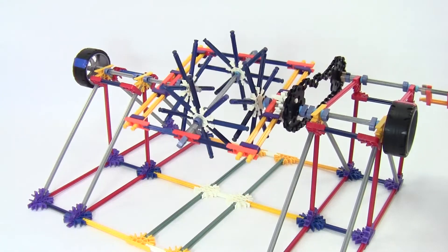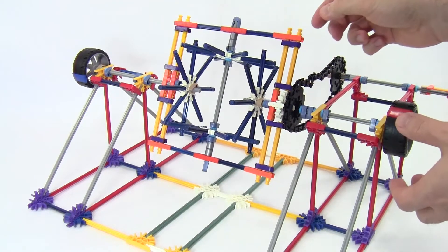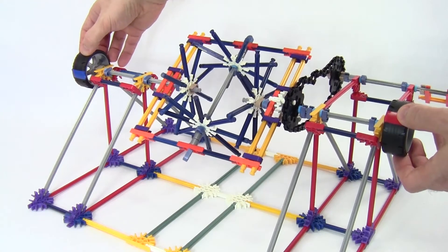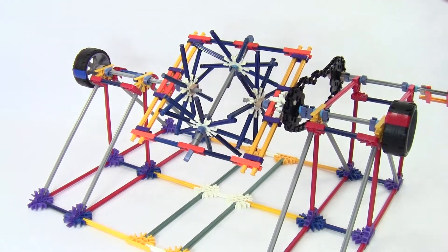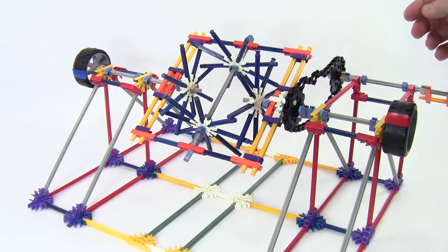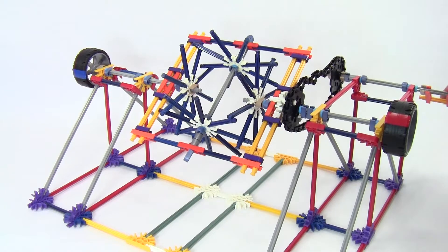This is where the differential comes in. The two halves of the axle are connected by a series of gears that allow the wheels to spin at different speeds or even in different directions. However, the entire axle, and therefore both wheels, can still be driven by a single drive shaft, or in the case of this K'nex model, a chain.